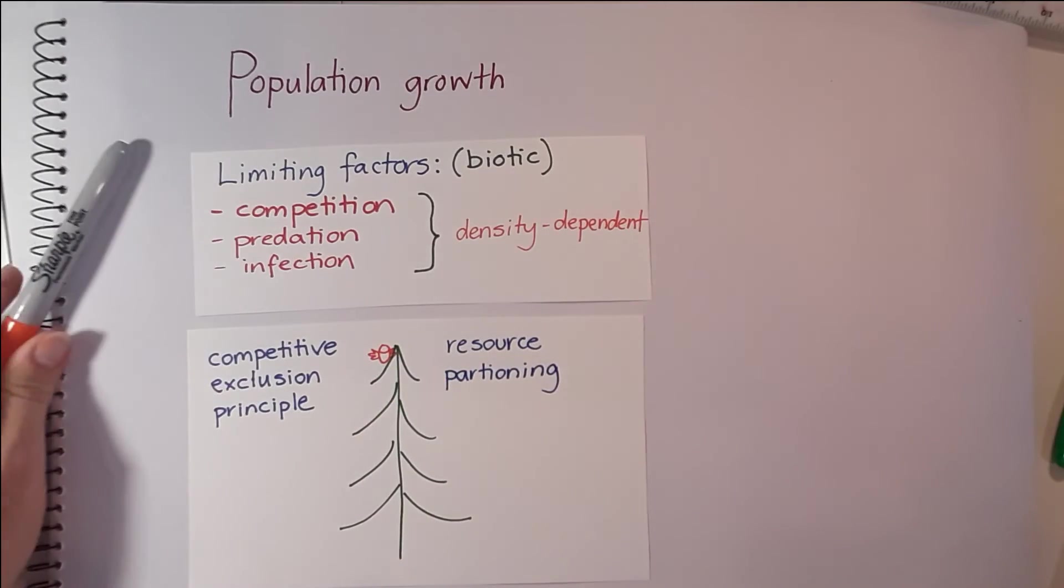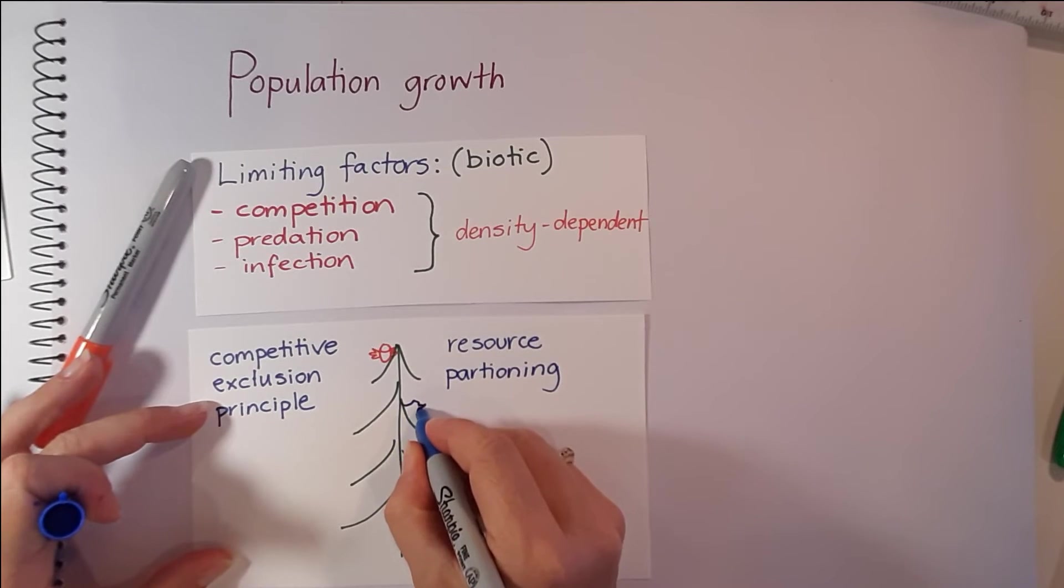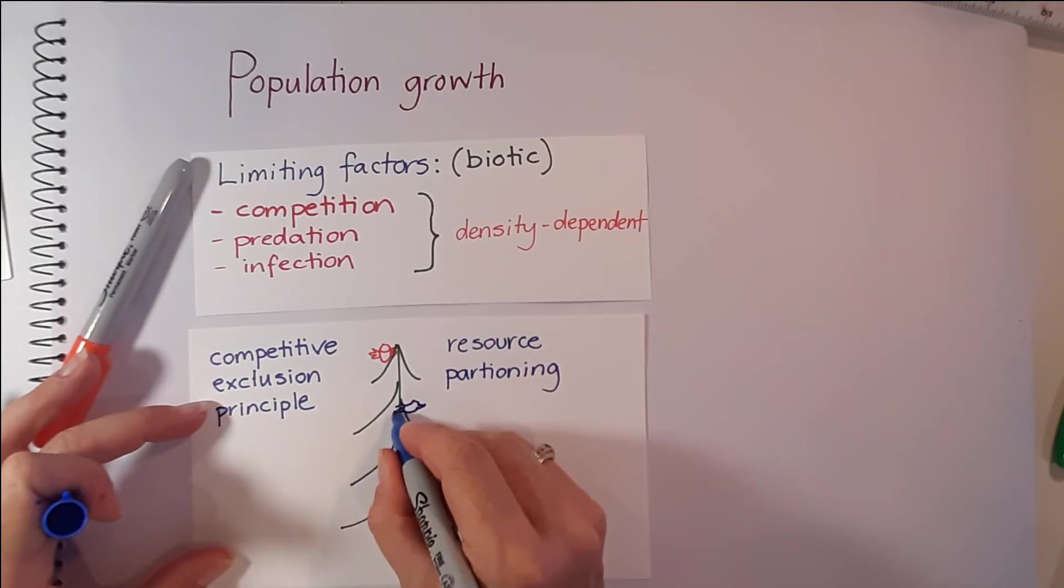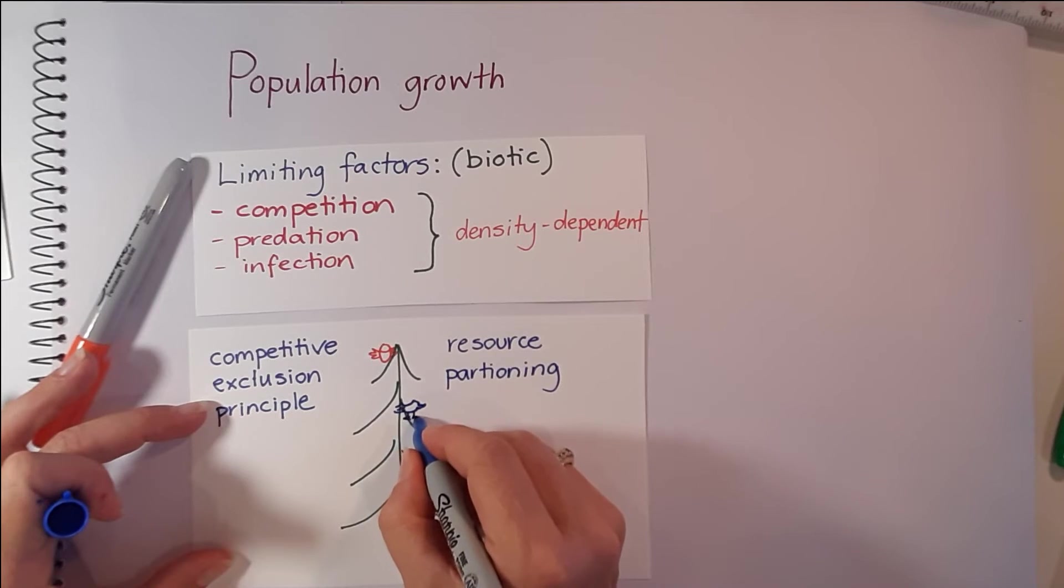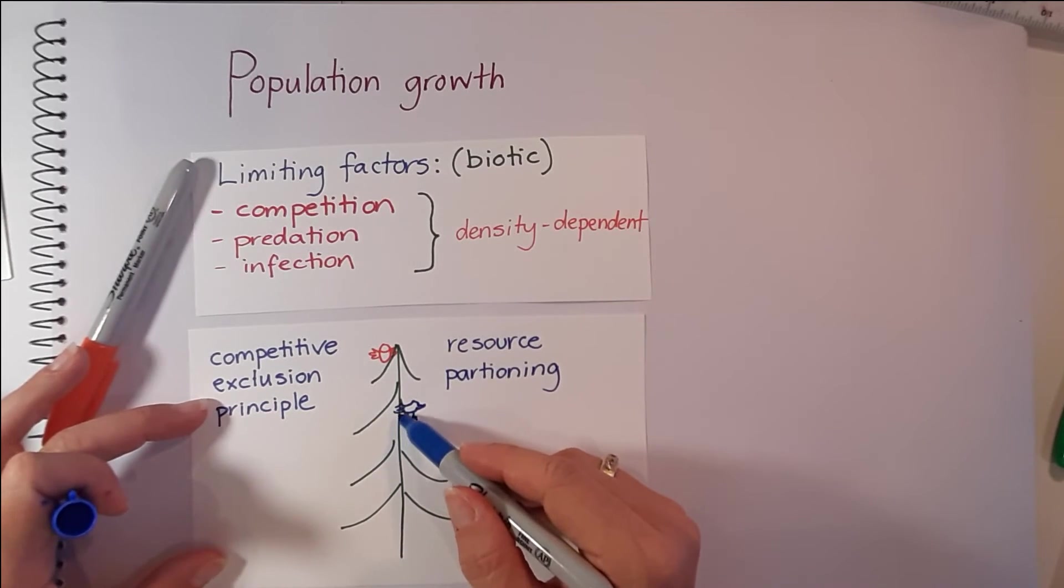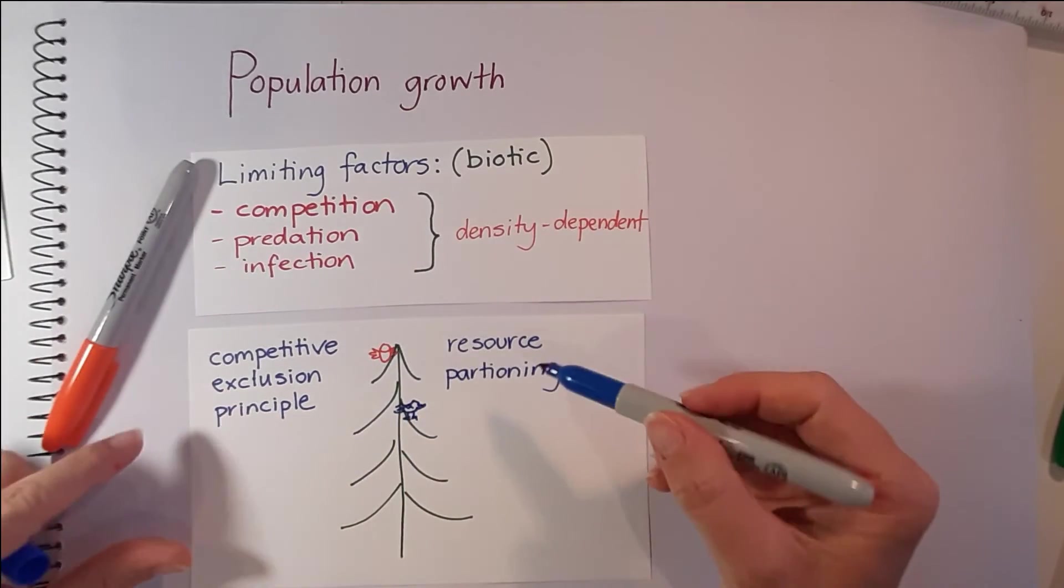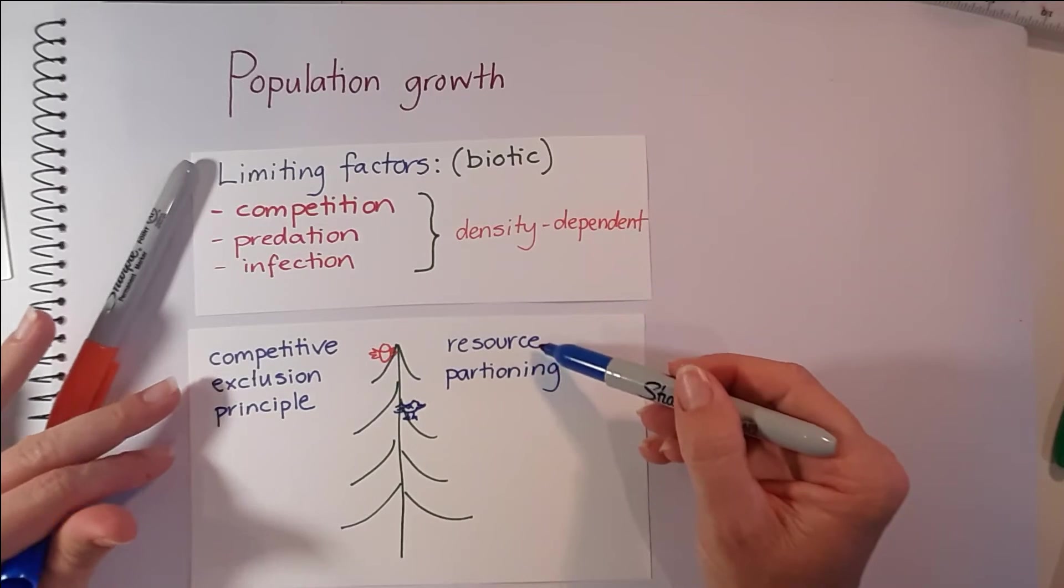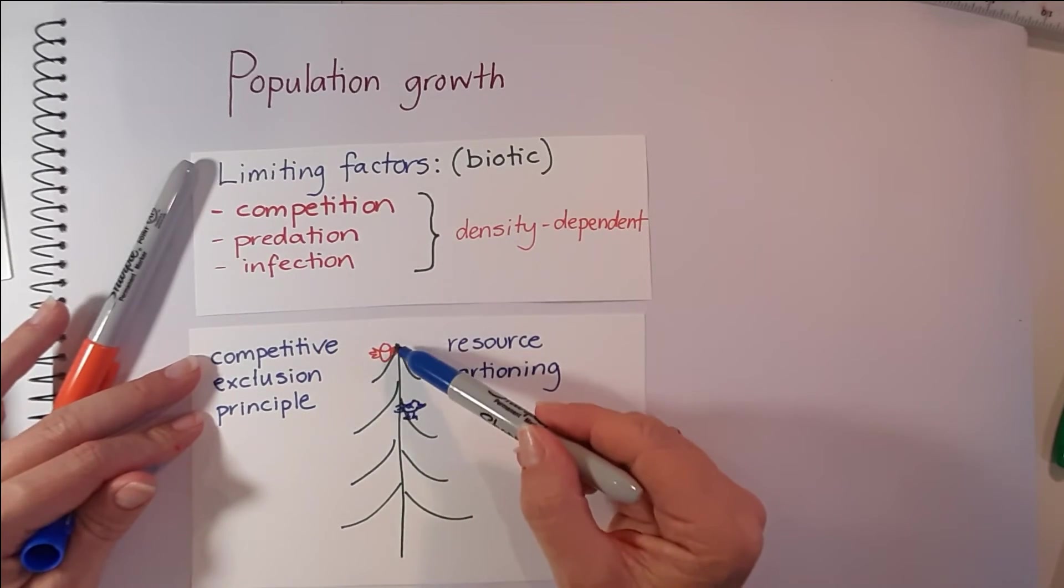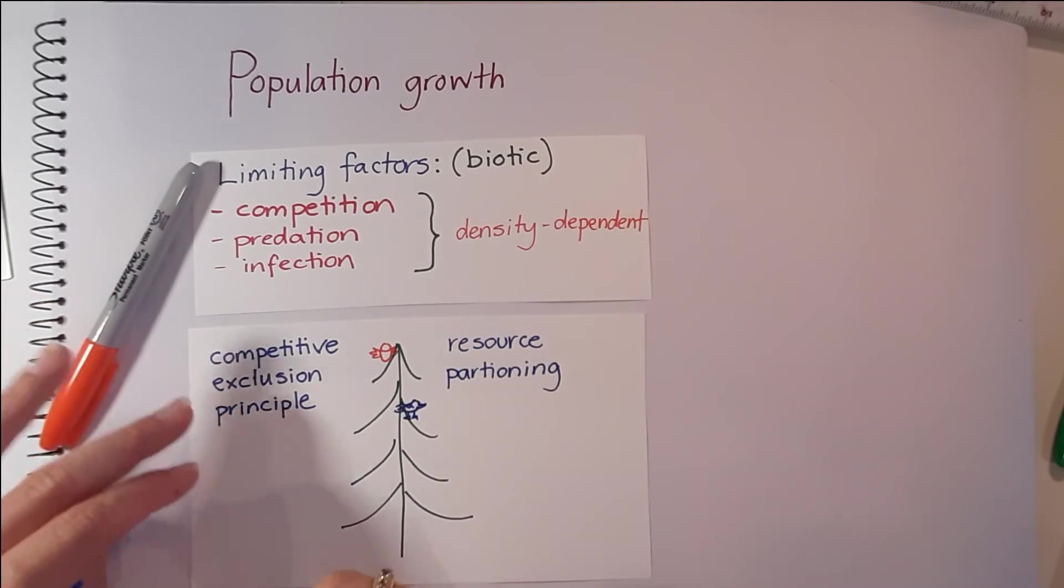There could be another species of bird that chose to live in the middle parts of the tree where they fed on insects that tended to hide in the burrows, but they were still living in that same tree. What they've done is to partition their resources because they can't all live in that same area because there's not enough resources to share.